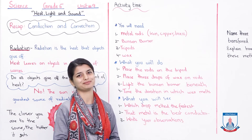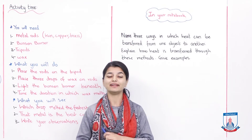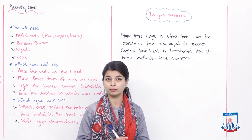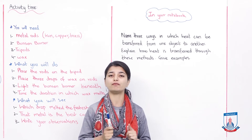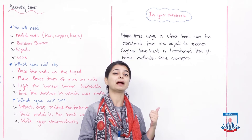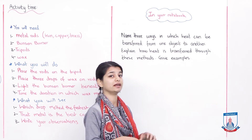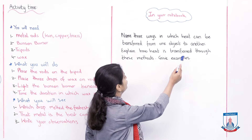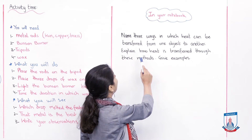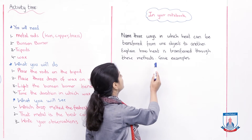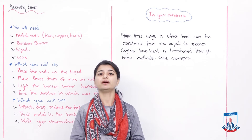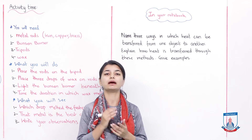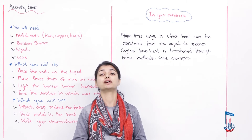Alright, so we are nearly at the end of Chapter 9, unit 9.1 about heat. But before we wrap it up, we will of course do some questions. The question is: name the ways in which heat can be transferred from one object to another, explain how heat is transferred through these methods, and give examples. You need to name three methods by which heat is transferred. It's not difficult at all because we have been discussing these three methods repeatedly over two lessons.